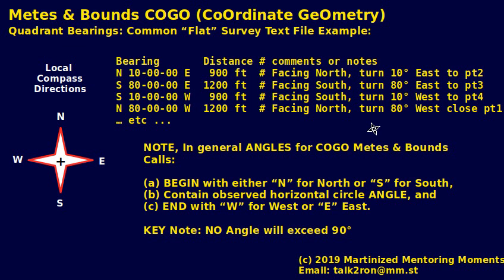We'll do a specific diagram, but I wanted you to see what a typical file looks like that is often fed into software or reported in a deed. It'll say thence, north 10 degrees east, 900 feet, arrive at a fence post.